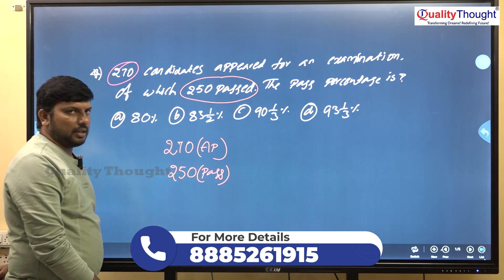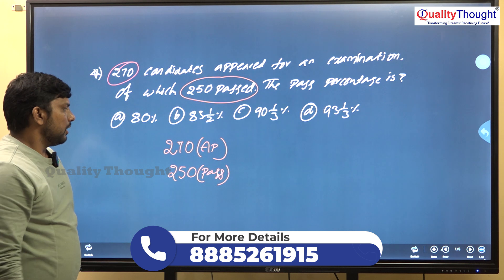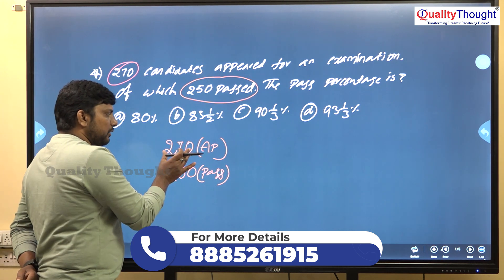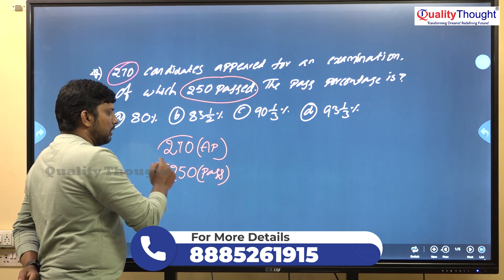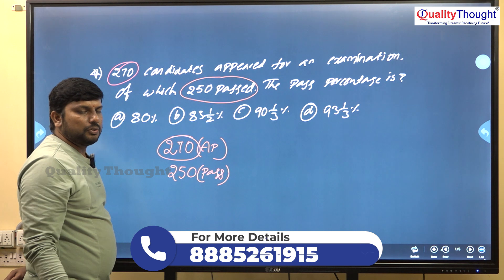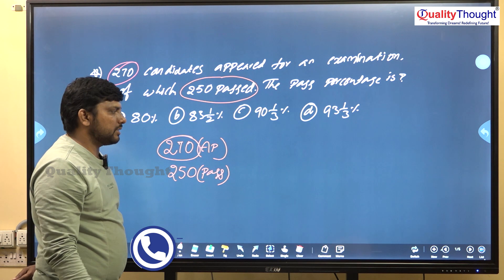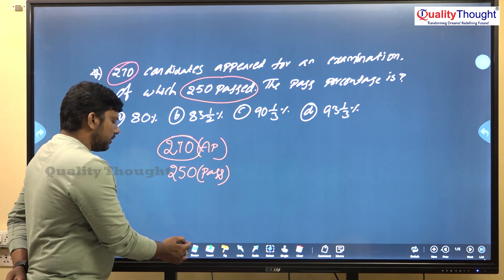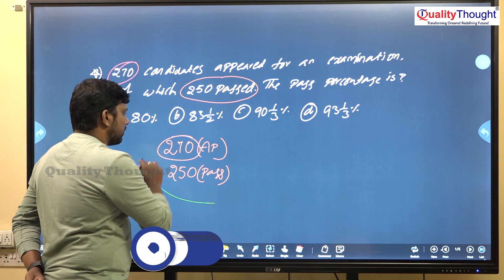So we need to find the pass percentage. Here the 100% value is 270. So 270 members is the 100% value, and we will talk about the different variants.